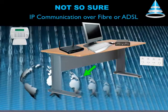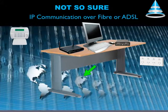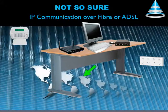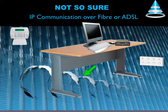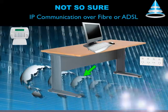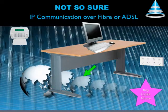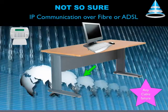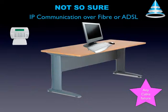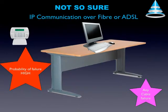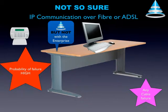So what happens if there is a failure or power loss on the ADSL router, the ethernet switch, any cable fault, or the mains power? Well, you lose ADSL and the ability for your security system to communicate with the monitoring center. In fact, the probability of failure for IP monitoring is greater than traditional landline communication — but not with the Enterprise.